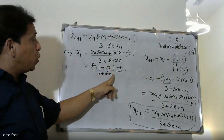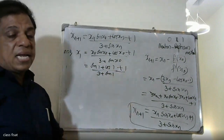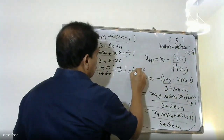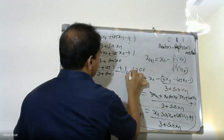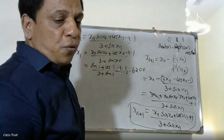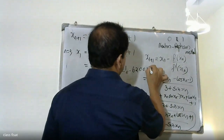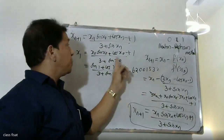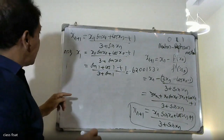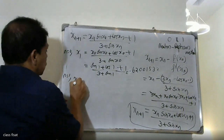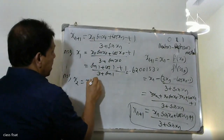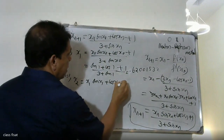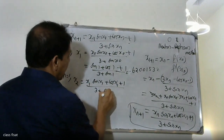Calculating with sin 1 and cos 1 values: x1 equals 0.6201532. Now for x2, we set n equal to 1: x2 equals x1 sin x1 plus cos x1 plus 1, divided by 3 plus sin x1.